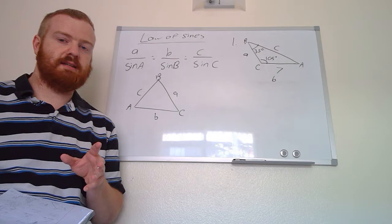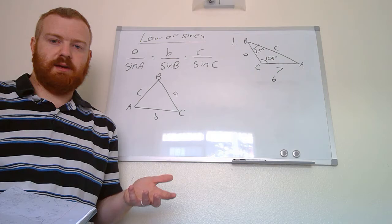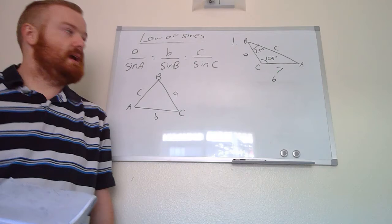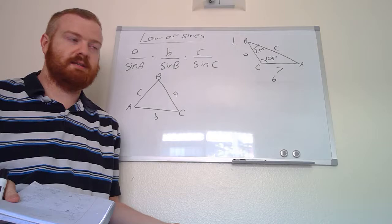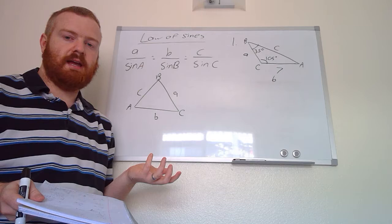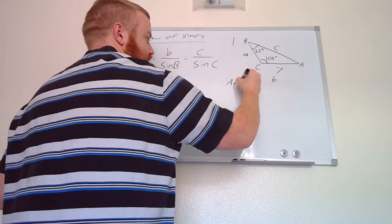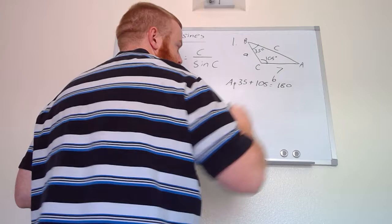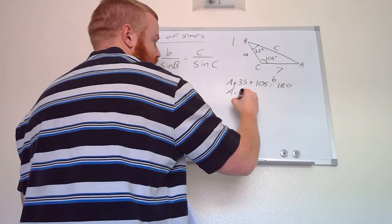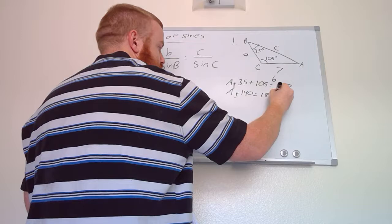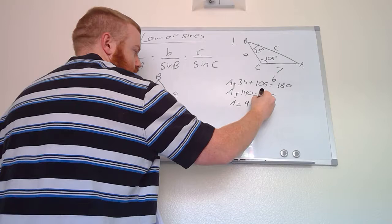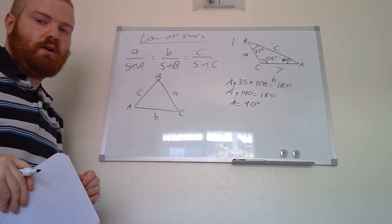There are two types of questions: ones where we have two angle measurements and one side length, and ones where we have two side lengths and one angle measurement. For this first type — two angles and one side — since we already have two of the three angles, we can solve for the third because all angles add up to 180. Angle A plus 35 plus 105 equals 180. Adding 35 and 105 gives 140, so angle A equals 180 minus 140, which is 40 degrees.